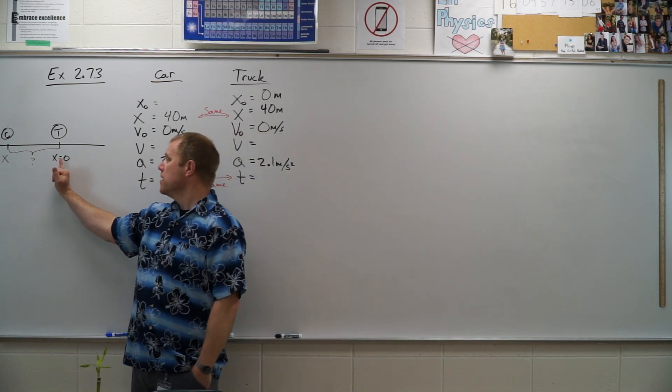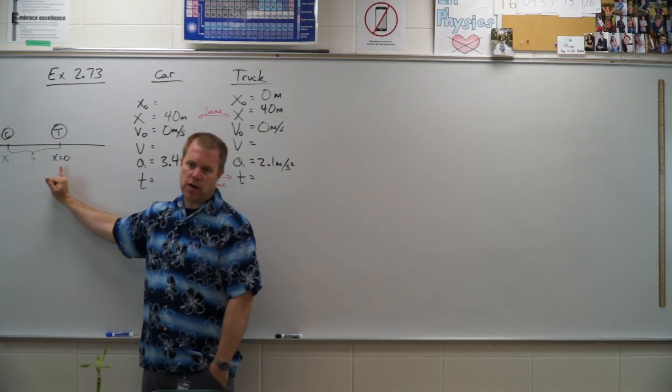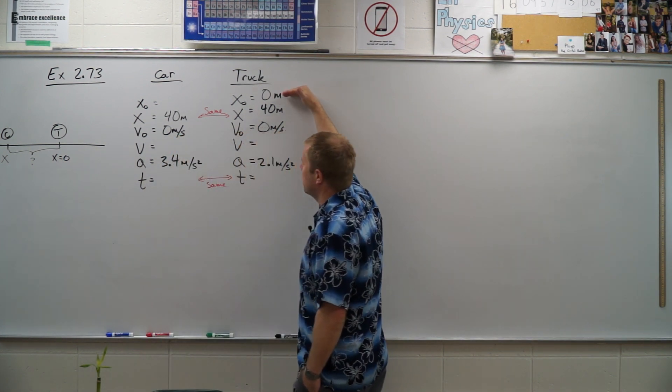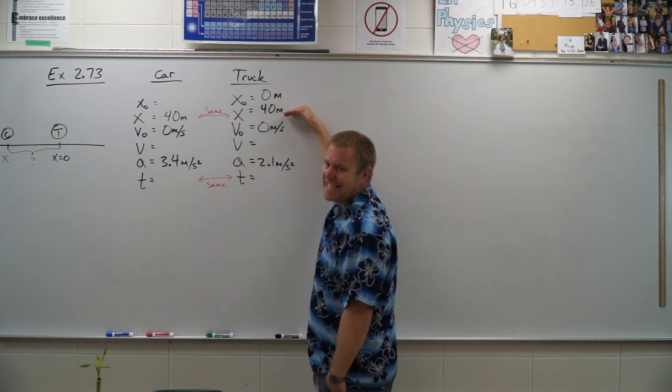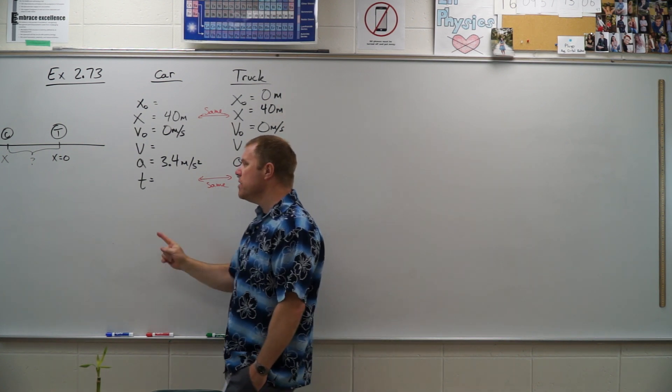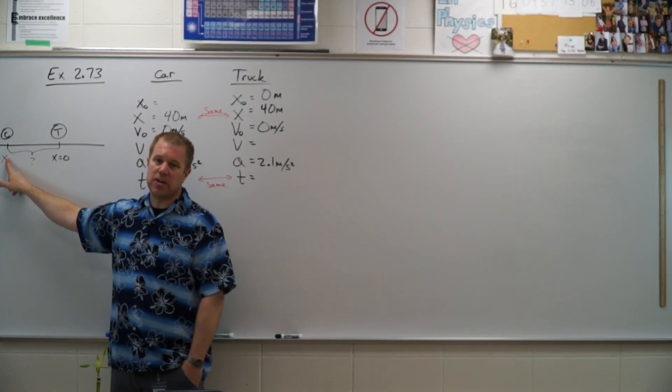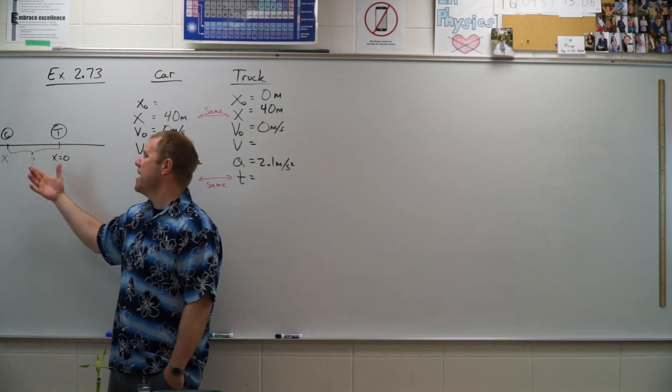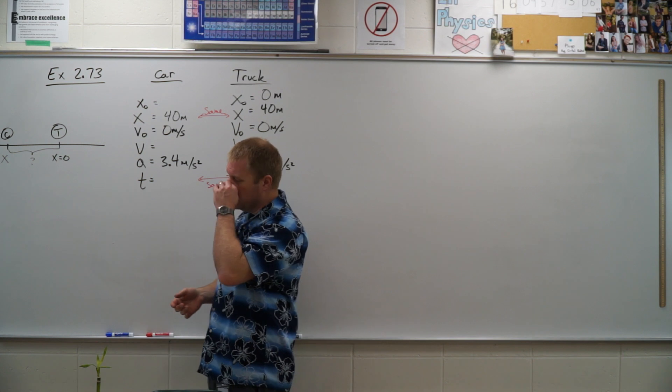So we start with our truck and we know that it goes 40 meters. So I'm going to say the truck starts at 0 and ends at 40. We do not however know the initial position of the car. We are going to get a negative number on our number line for that and that negative is just going to tell us it starts behind the truck.